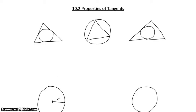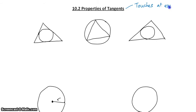Last chapter, tangent meant the tangent of an angle is equal to the ratio of the opposite side of a right triangle over the adjacent side of a right triangle. In this chapter, tangent is going to have a different definition — tangent is going to mean touches at exactly one point. So we have the same word tangent with two definitions. How do we tell the difference between the two? Context.